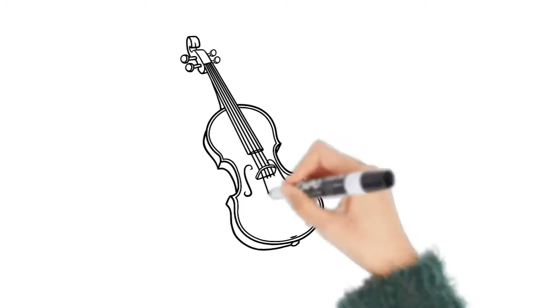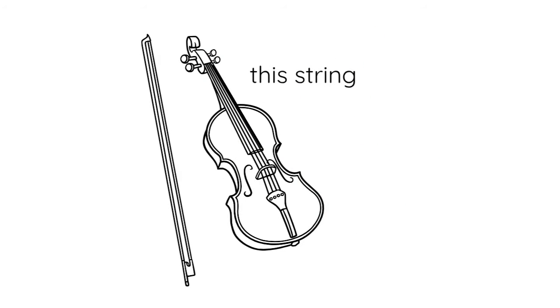If you have a violin nearby, go ahead and pluck the E string. That's the thinnest string on the outside. Notice what the note sounds like. Here's my E.